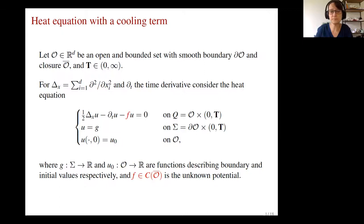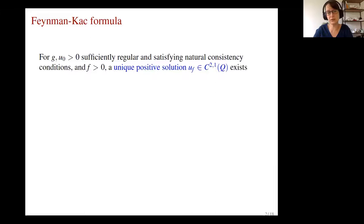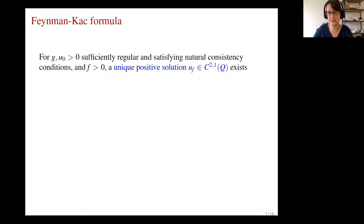The forward problem is well studied. If we assume the boundary and initial values are both positive and sufficiently regular — meaning they meet smoothly enough — and if I assume F is positive, then we know there is a unique positive solution U_F. This U_F, in the C^{2,1} sense, has two space derivatives and one time derivative, as this is a parabolic problem with both space and time. We can also write the solution down using the Feynman-Kac formula.